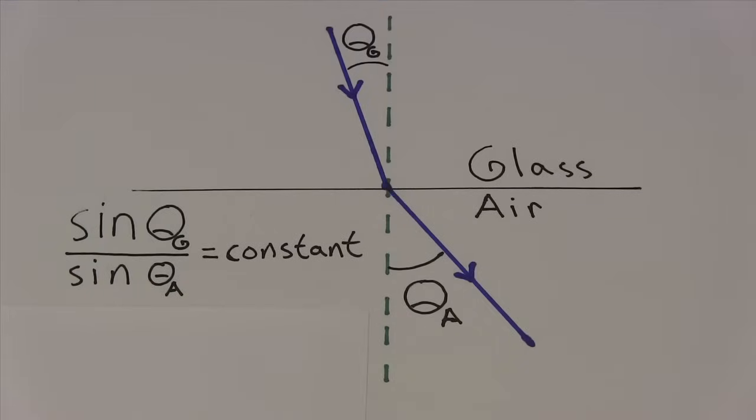They also had knowledge about how light behaved at the boundary between two materials. For instance, at a planar boundary, they knew that the ratio of the sine of the angle on each side of the boundary was fixed for a given set of materials.